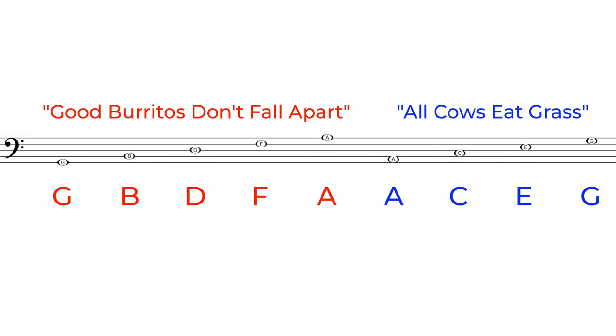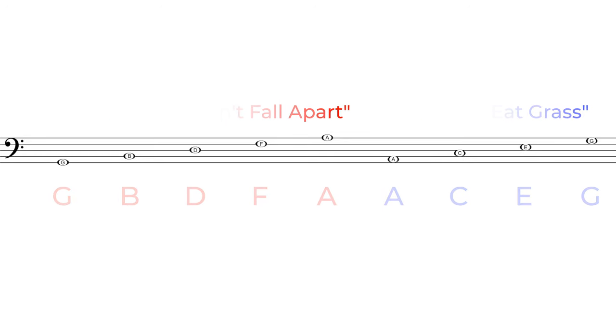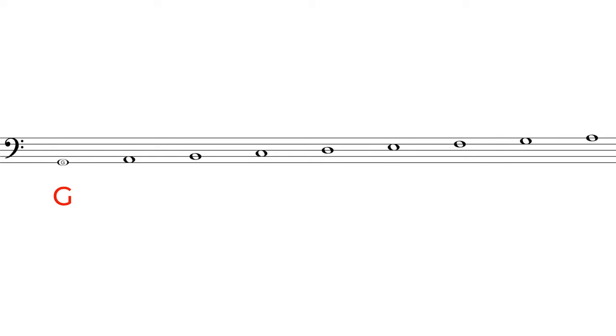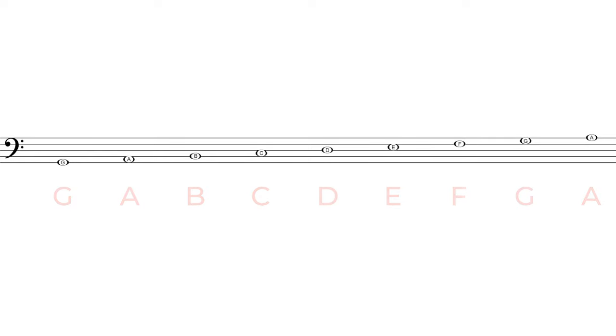Looking at the notes this way gives us an understanding of our lines and spaces separately, but when we blend them together we notice a pattern. The musical alphabet goes from A through G and then repeats. Starting from the bottom line we have G, and when we move up to the very next space we go right back to A. The notes continue to move alphabetically from line to space all the way up. Moving down the staff, the notes move in reverse alphabetical order from the top to the bottom.